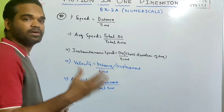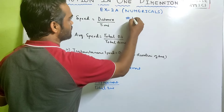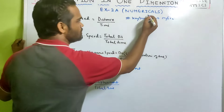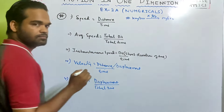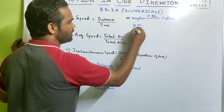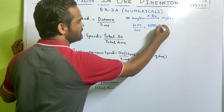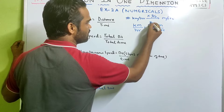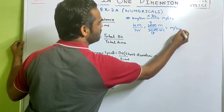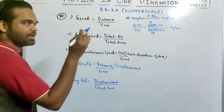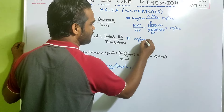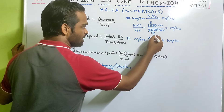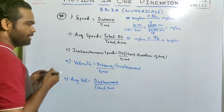At times we need to convert speed from kilometer per hour to meter per second. To do that, simply multiply by 5/18. One kilometer is 1000 meters and one hour is 3600 seconds, which gives us 5/18. To convert from meter per second to kilometer per hour, multiply by the reciprocal, i.e., 18/5.